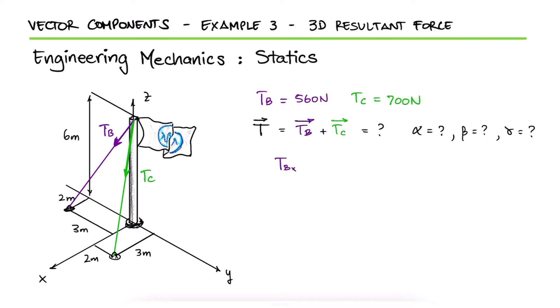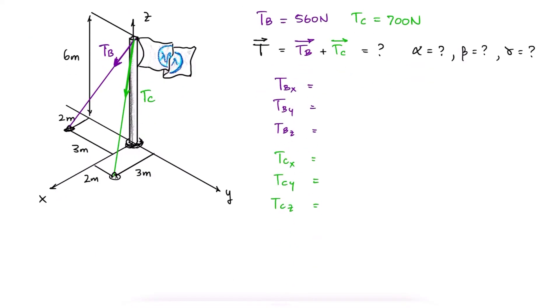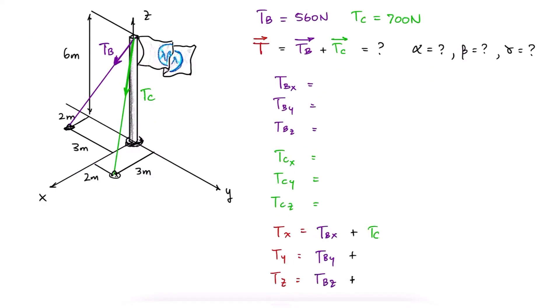Just like in the previous example, we'll find the orthogonal components of Tb and Tc, to with them find the components of vector T. The difference in this case is that we don't know the directional angles for Tb and Tc, but we do know the location in meters of where each vector is pointing towards.